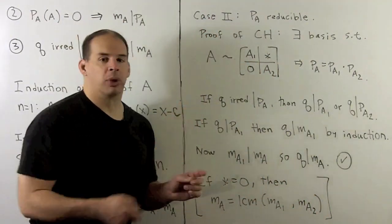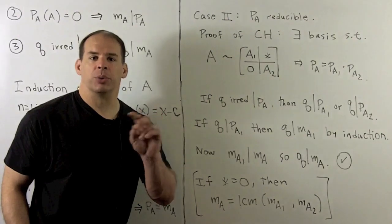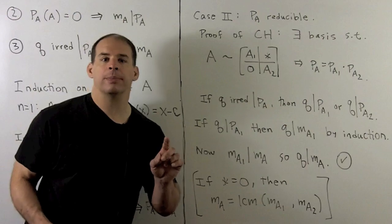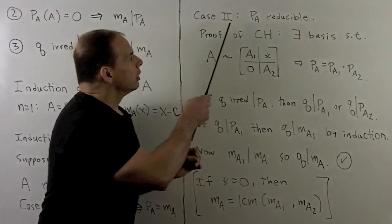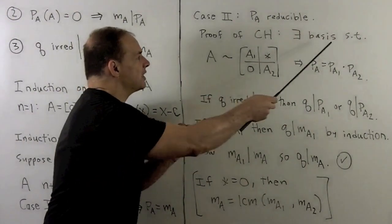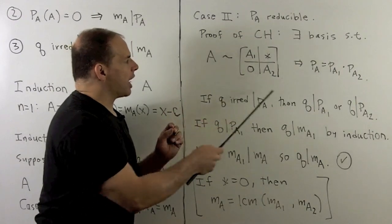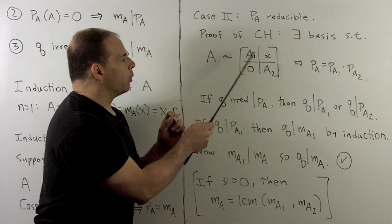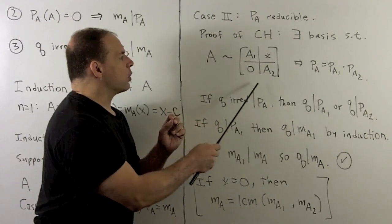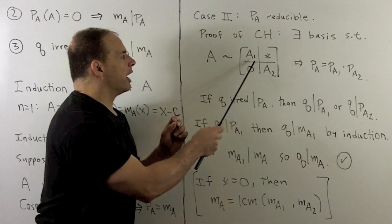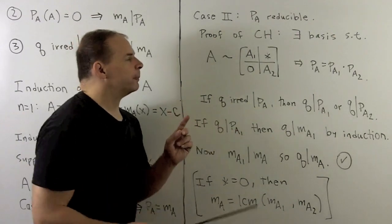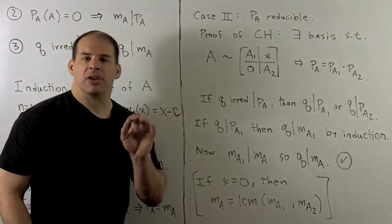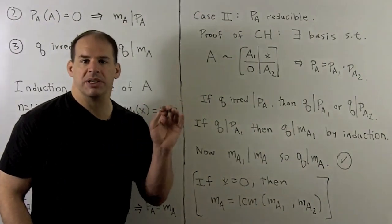Otherwise, we have that P_A is reducible, so we can factor it into two polynomials of positive degree. And if we go to the proof of the Cayley-Hamilton theorem, we note this guarantees that we can find a basis such that I can put A in block upper triangular form. So we have square blocks on the diagonal, A1 and A2. We have zeros in the lower left-hand corner, and whatever's in the upper right-hand corner, we're not worried about.